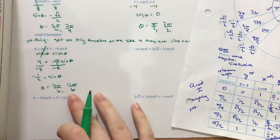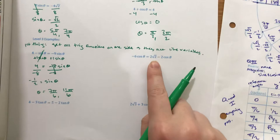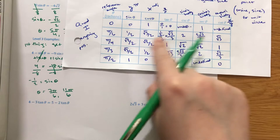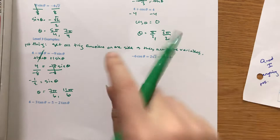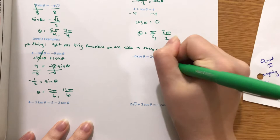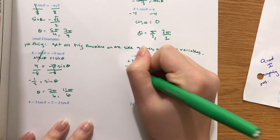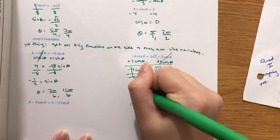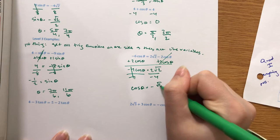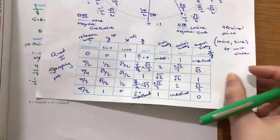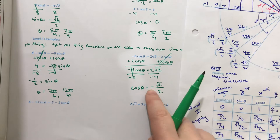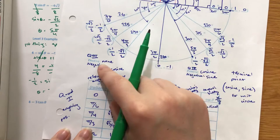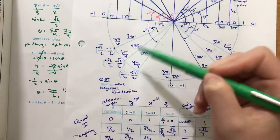It looks scary because there's a square root, but a lot of our table values have roots, so don't be worried — it'll reduce down to something you can see. First, get all trig functions on one side. There's negative 6 cosine here and negative 2 cosine here, so add 2 cosine: negative 6 plus 2 is negative 4 cosine theta equals 2 root 2. Divide both sides by negative 4 — negative 2 fourths is negative one-half, so cosine equals negative root 2 over 2. Cosine is root 2 over 2 at pi over 4 values, and cosine is negative in quadrants 2 and 3. The pi over 4 values from quadrants 2 and 3 are 3 pi over 4 and 5 pi over 4. Theta equals 3 pi over 4 and 5 pi over 4.